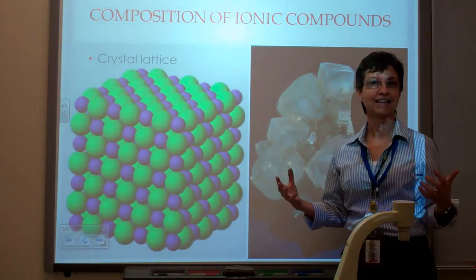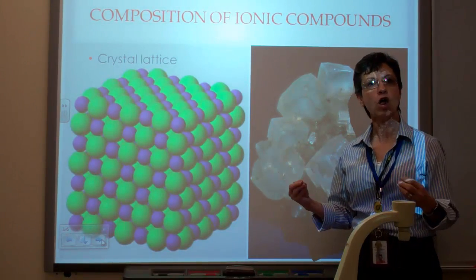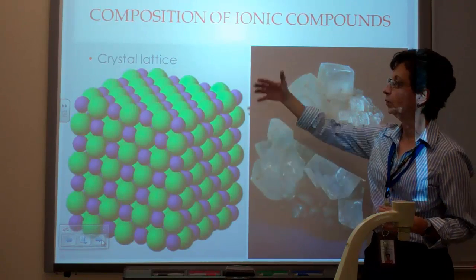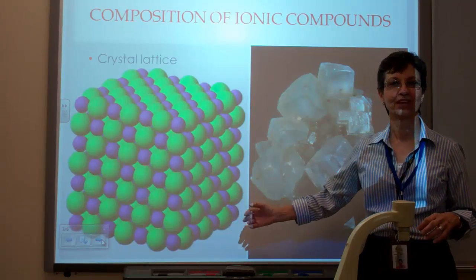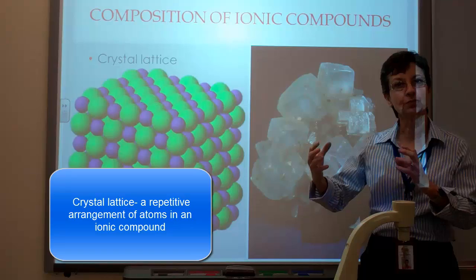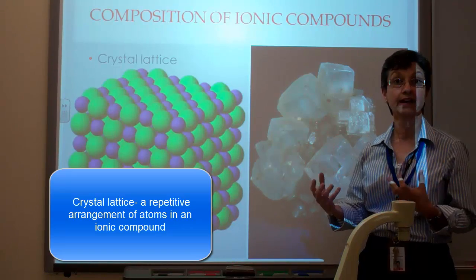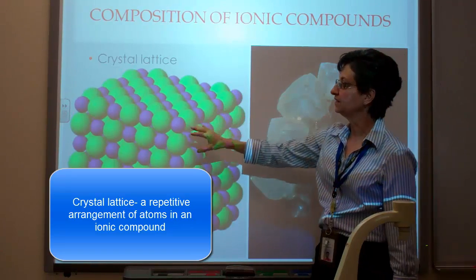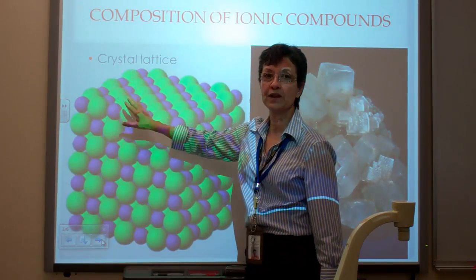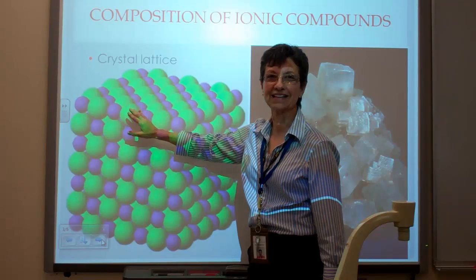So these ionic compounds are all salts, crystals. This is what we call the crystal lattice. A crystal lattice is a repetitive arrangement of atoms in an ionic compound. In this case, we have sodium ions, the purple ones, and then we have green ones, the chloride ions.